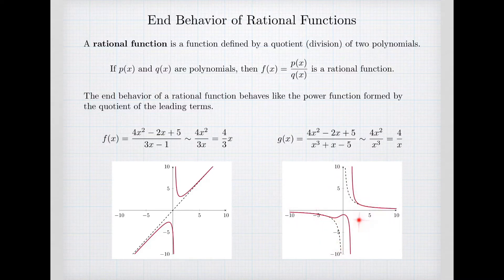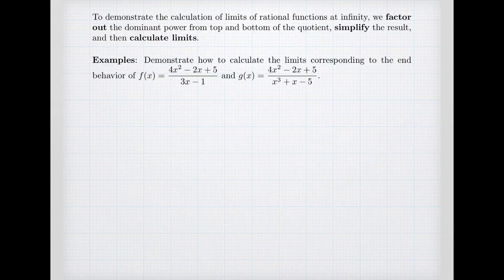Notice the two functions have different behavior in the middle, but as x goes to infinity, both functions behave the same — they're both going to 0 as x goes to plus or minus infinity. To demonstrate the calculation of limits of rational functions — in other words, how we justify this relationship — we're going to take three steps.